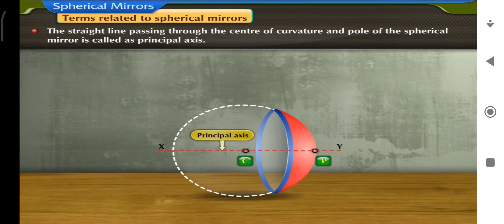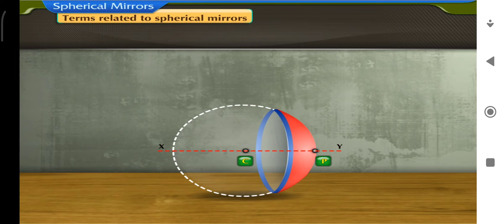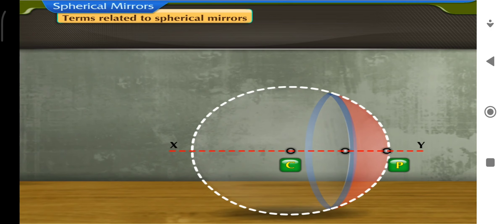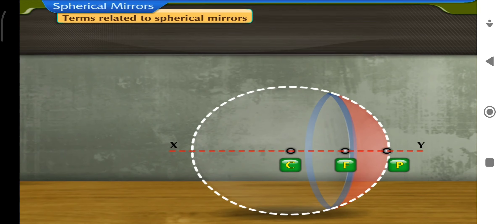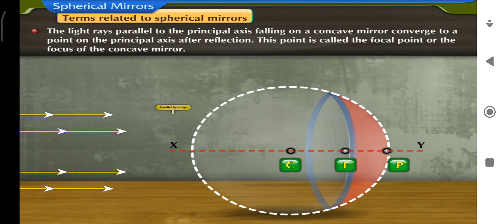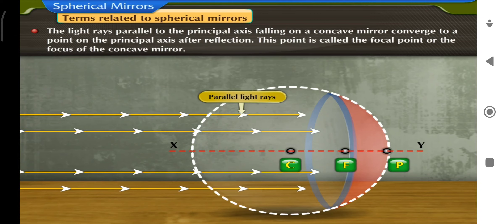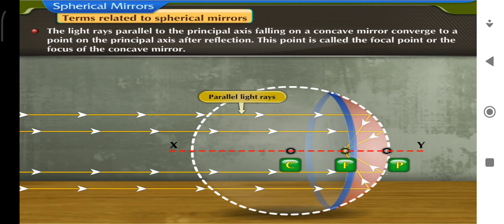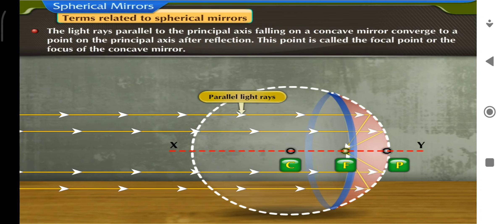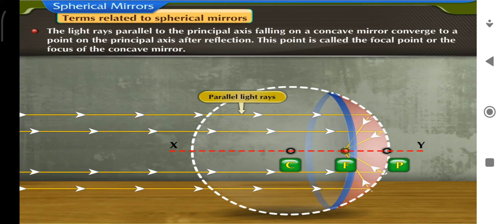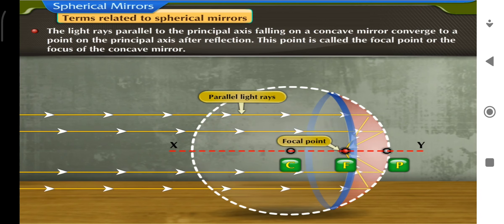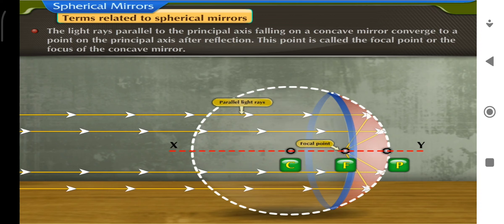The principal axis is the straight line passing through the pole and center of curvature of the mirror. Line XY is the principal axis. The focus of a concave mirror, abbreviated as F, is the point on the principal axis where light rays parallel to the principal axis converge after reflection. This point is called the focal point or focus of the concave mirror.